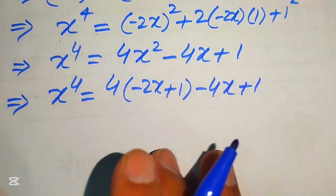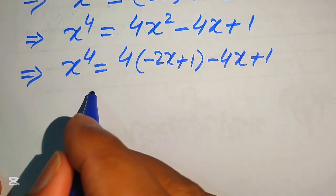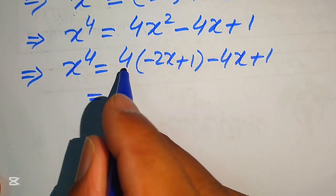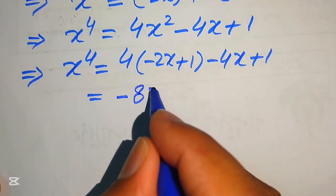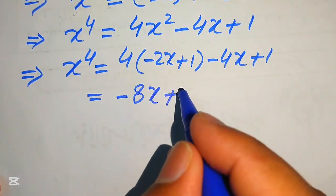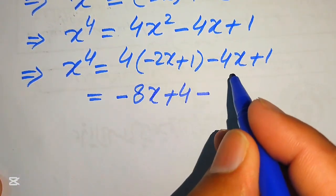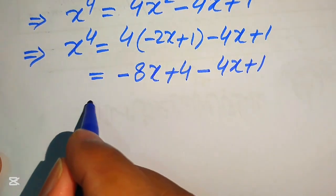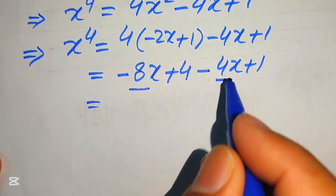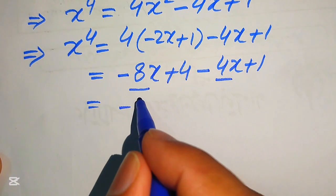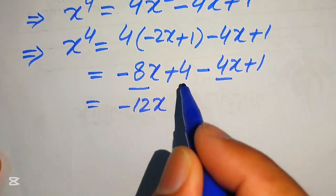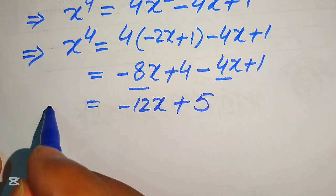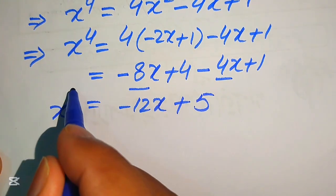We multiply 4 across both terms: 4 times minus 2x gives minus 8x, and 4 times 1 gives 4. So we have minus 8x plus 4 minus 4x plus 1. Combining like terms: minus 8x minus 4x equals minus 12x, and 4 plus 1 equals 5. Therefore, x to the power of 4 equals minus 12x plus 5.